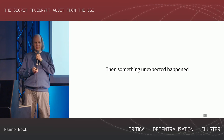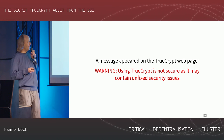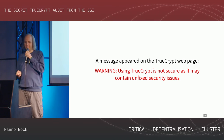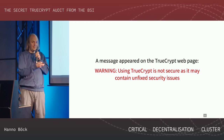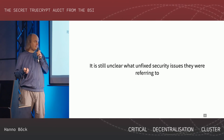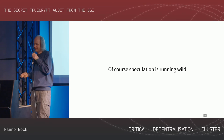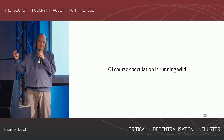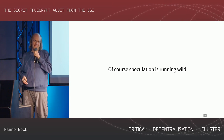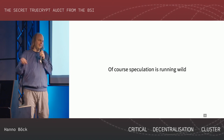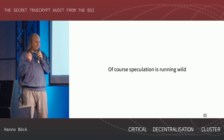Then something unexpected happened. Suddenly there was a message on the TrueCrypt webpage which said: 'Warning, using TrueCrypt is not secure as it may contain unfixed security issues.' It's unclear why this happened, it's unclear what security issues they were talking about. There's a lot of speculation. One theory is that the guy who is in jail made a deal with law enforcement for a lower sentence, and some people speculate that part of that deal was that he would say TrueCrypt is unsafe because the NSA cannot break it. I'm not sure I believe that, but speculation like that runs around.